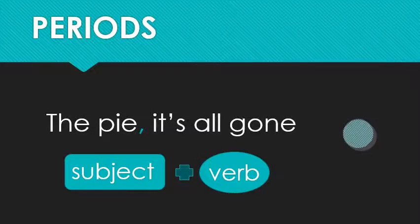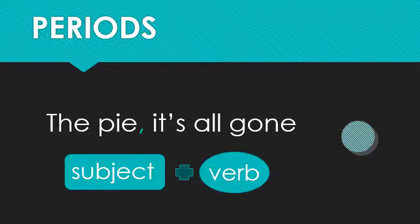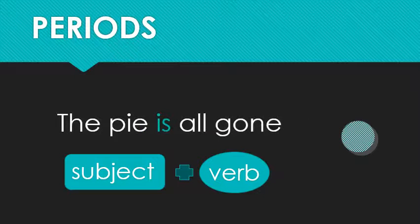If you want to fix this, you could put a comma, make a little noun phrase, a little noun clause, the pie, it's all gone. But it's just simpler to say, the pie is all gone. Period. I'm happy.